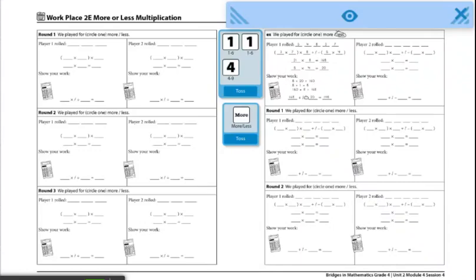These are the directions for Workplace 2E More or Less Multiplication. Materials you'll need are the 2E More or Less Multiplication Record Sheet, two dice numbered 1 through 6, one die numbered 4 through 9, a more or less cube, a calculator, and a large base 10 grid paper if desired.